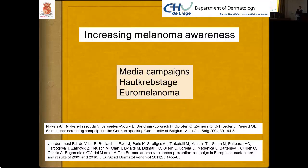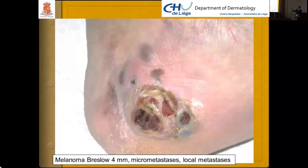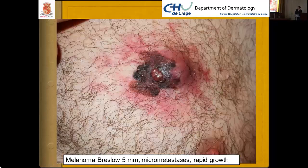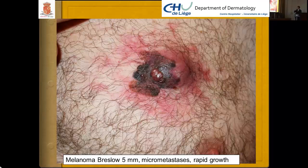Here are some clinical pictures. This is a melanoma on the heel with presence of local micrometastasis and local metastasis already present. Here is another type of melanoma, 5 mm, with a radiative cystic lesion, micrometastasis, and rapid growth on the chest of an elderly gentleman.